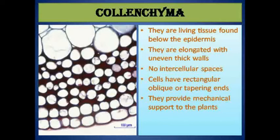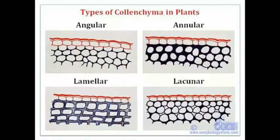When you learned about parenchyma tissues, intercellular spaces were present between adjacent cells. But in collenchyma, there are no intercellular spaces. The cells may be rectangular or oblique in nature. These collenchyma tissues are classified into four categories, depending upon the pattern of thickening.